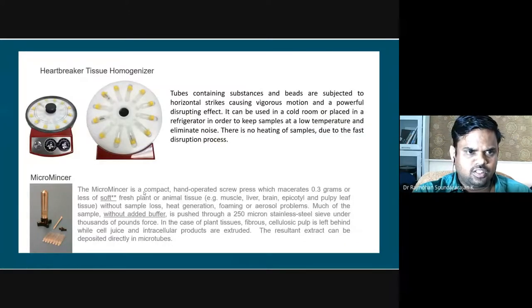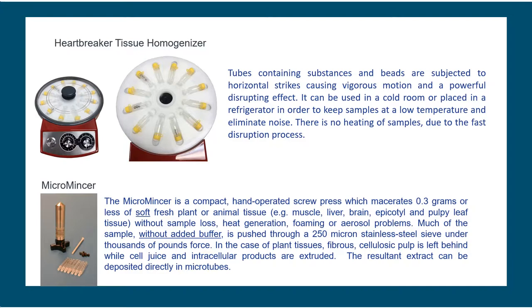The Heartbreaker tissue homogenizer is a compact, hand-operated, screw-press type cell disrupter. It can be used to separate out cells and organelles from fresh plant and animal tissues like muscle, liver, brain, and pulpy leaf tissues. There is no sample loss, no heat generation, no foaming or aerosol problems. The sample is pushed through a 250-micron stainless steel sieve under thousands of pounds of force. For plant tissues, the fibrous cellulosic pulp is left behind while cell juice and intracellular products are extruded. The resultant extract can be deposited directly into microtubes.